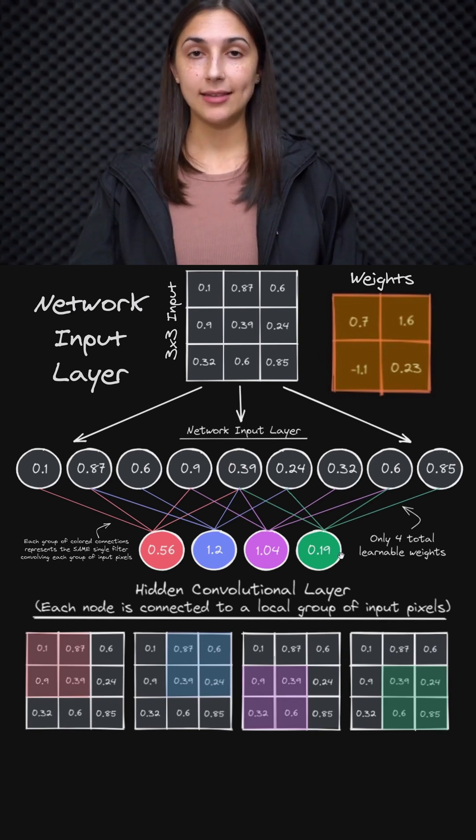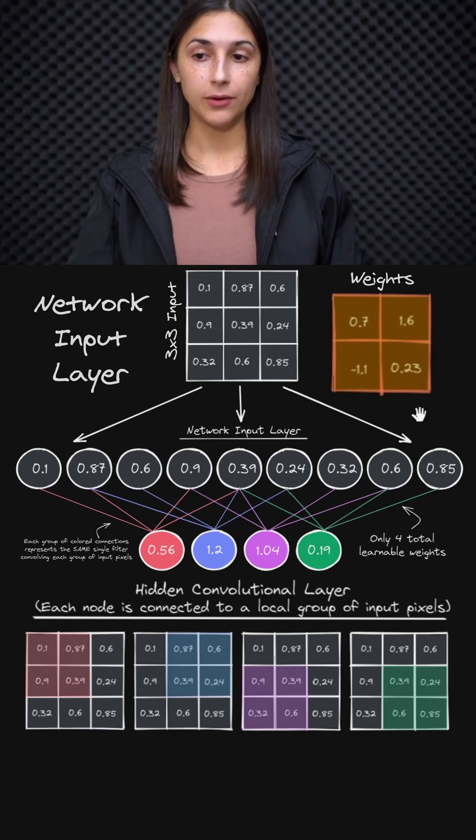Except for now, instead of multiplying the inputs by the weights, we multiply the inputs by the filter values. And as we just talked about, we have the same four filter values that are being used to connect the groups of input pixels to our outputs here.